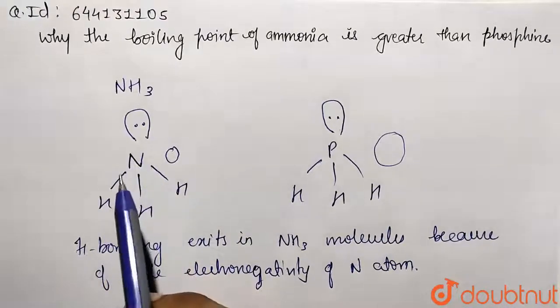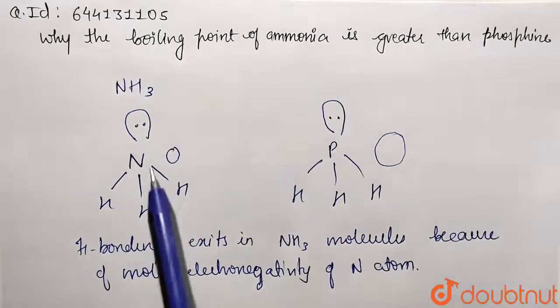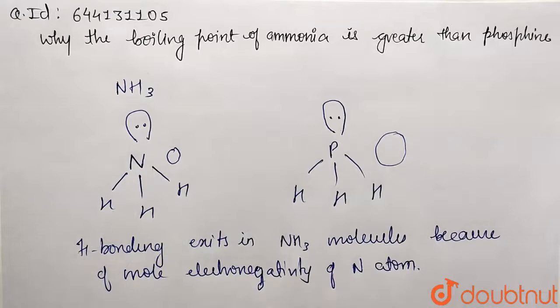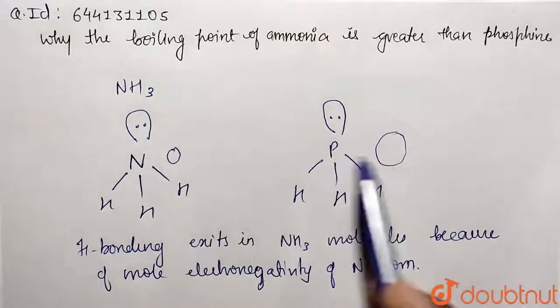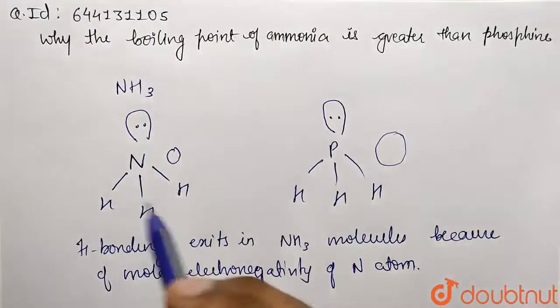So they are having more forces of attraction between interatomic particles, so their boiling point is going to be higher. That means we need more temperature to boil them. Whereas phosphine cannot form hydrogen bonding due to its less electronegativity value.